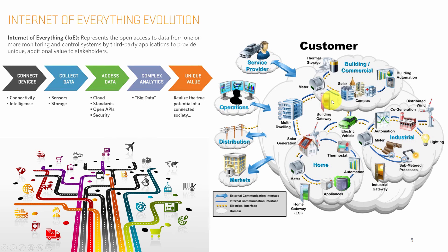Now, the evolution of the Internet of Everything — it means the connection of everything. Everything is connected with each other very closely. In this example, buildings are commercial such as solar campus, building automations, thermal storage, meters, home, and industrials — everything is connected. In the Internet of Everything, you first connect the devices, then collect the data, then access the data with cloud standards, open APIs, and security. Then complex analytics runs on the accessed data and generates unique value, realizing the true potential of a connected society.